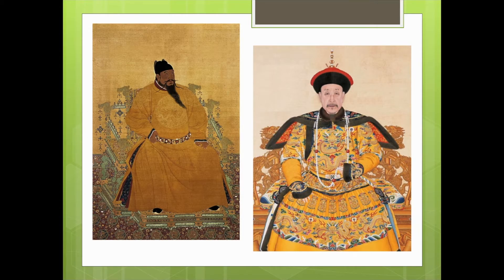Historically, the dragon was the symbol of the emperor of China. In the Zhou dynasty, the five-clawed dragon was assigned to the son of heaven, the four-clawed dragon to the nobles, and the three-clawed dragon to the ministers. So the number of claws being depicted on a dragon can help you determine who's being referenced. In the Qin dynasty, the five-clawed dragon was assigned to represent the emperor, whereas the four-clawed and three-clawed dragons were assigned to the commoners — so it depends also on the dynasty that you're talking about.